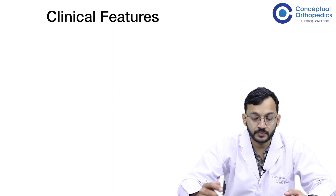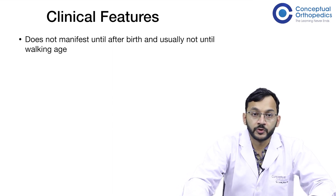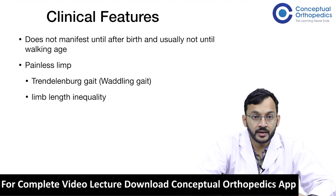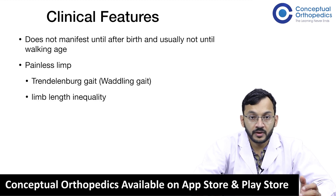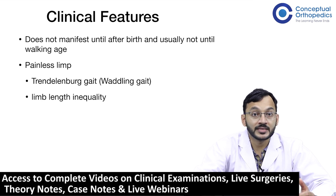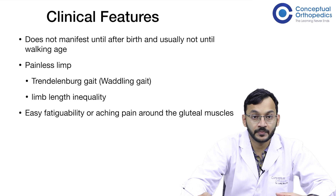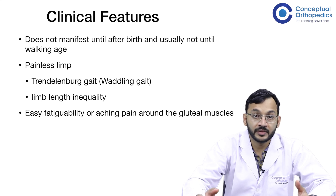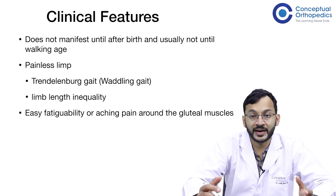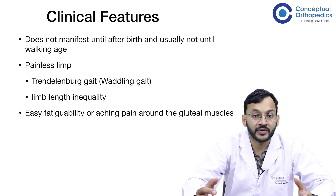Clinical features often do not manifest until after birth — usually not until walking age. The most common presenting clinical feature is a painless limp. This is often a Trendelenburg gait, and in bilateral conditions a waddling gait can be seen. As the child grows, limb length inequality may also appear. Due to the Trendelenburg lurch and leg length inequality, there is easy fatigability and pain around the gluteal muscles, making it difficult for children to keep up with their peers.